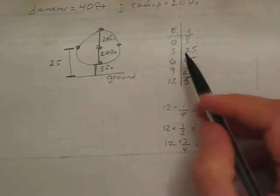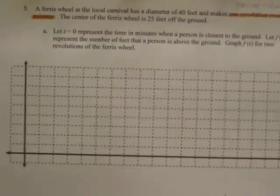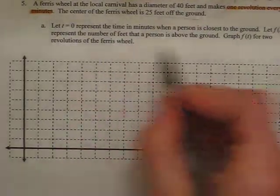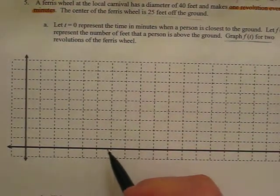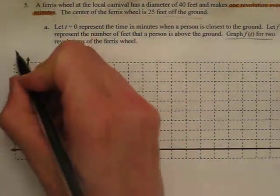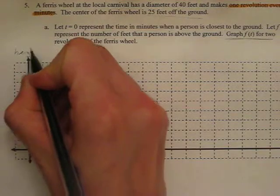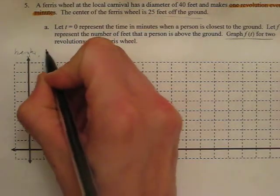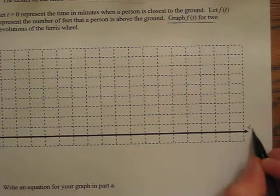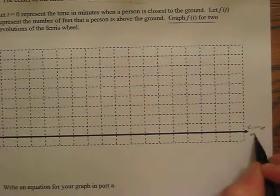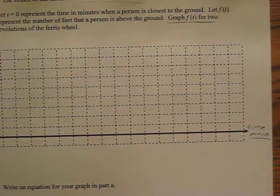So we're going to use this table of values here to graph on this grid. Whenever you graph something, it says to graph two revolutions of the ferris wheel. So, we know that the y-axis is height in feet, and we know that the x-axis is time in minutes.